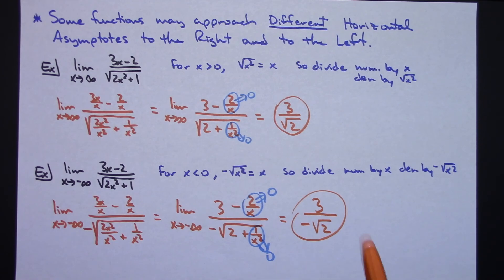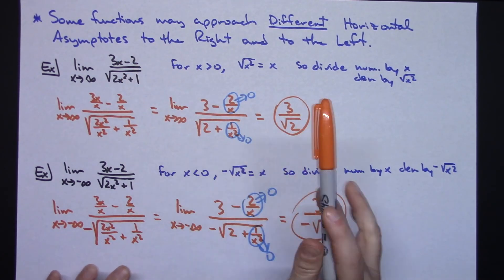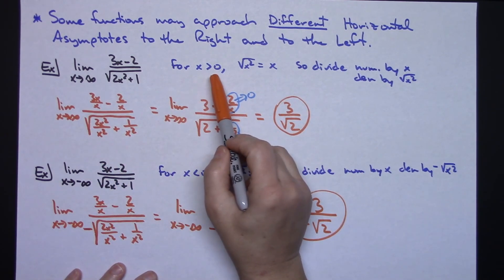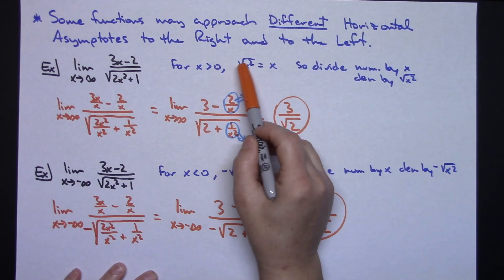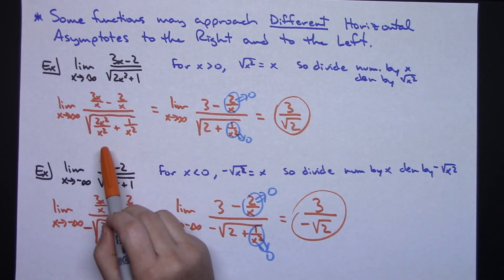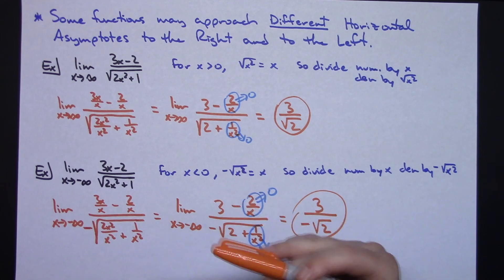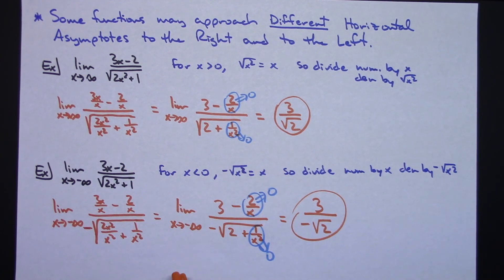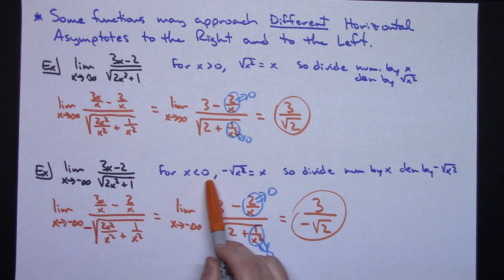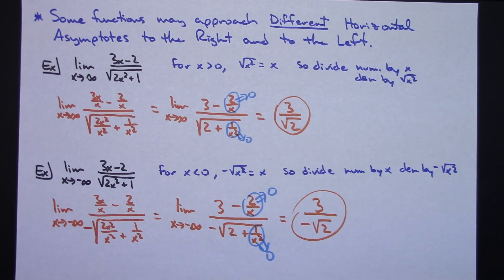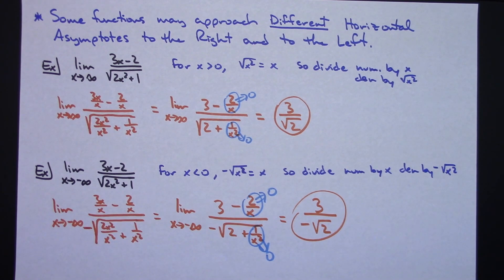The hardest part to remember is: when x is greater than 0 and you have a square root of x squared in the denominator, it simplifies to x — you're dividing top and bottom by the same thing. When x is approaching negative infinity, x is less than 0, so you have to throw in that extra negative. It's a tough example to wrap your head around, but once you do enough of these it goes smoothly. Thanks for watching and don't forget to subscribe!